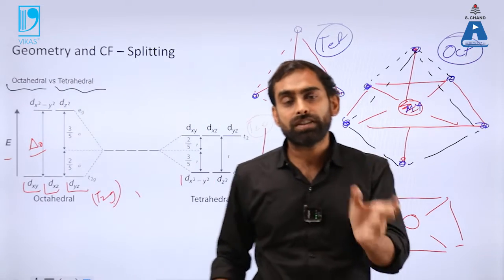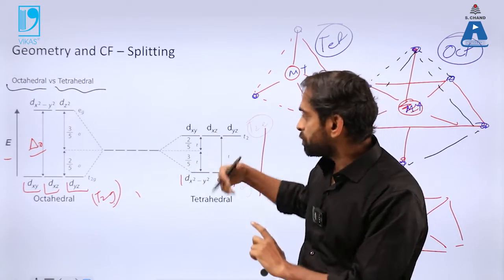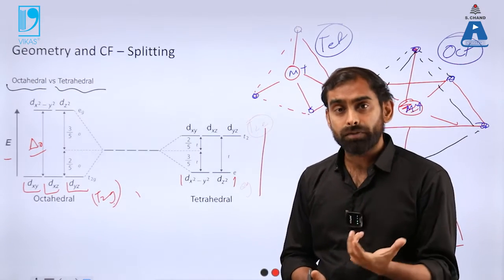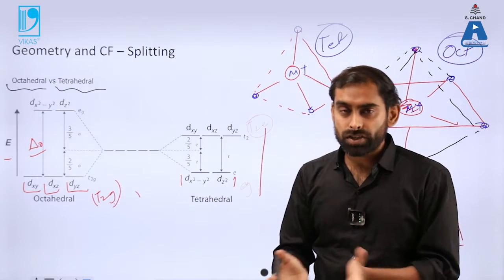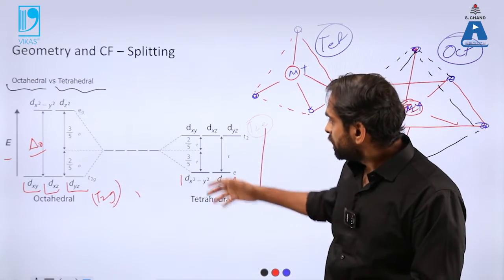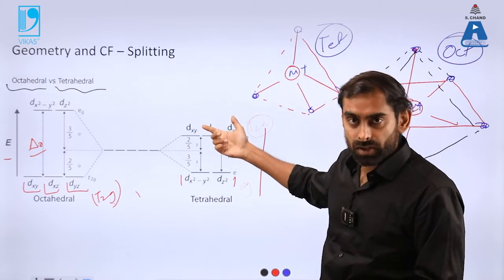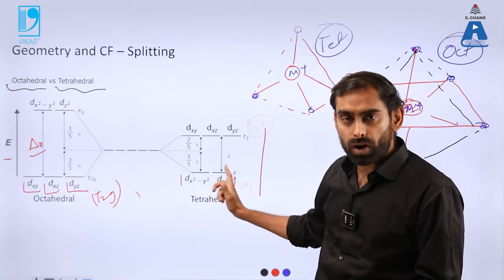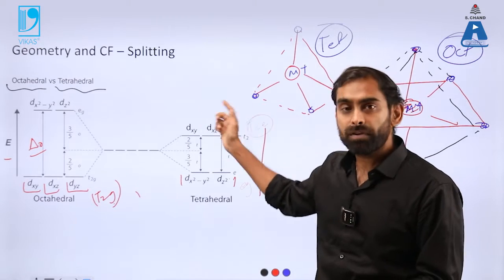And therefore when you are writing down or when you are representing the electronic configuration or coordination configuration of a complex, then you must have to take care of this. So in this case when the geometry is tetrahedral, electrons will be first filled in these two orbitals, then they will be filled in these three orbitals.